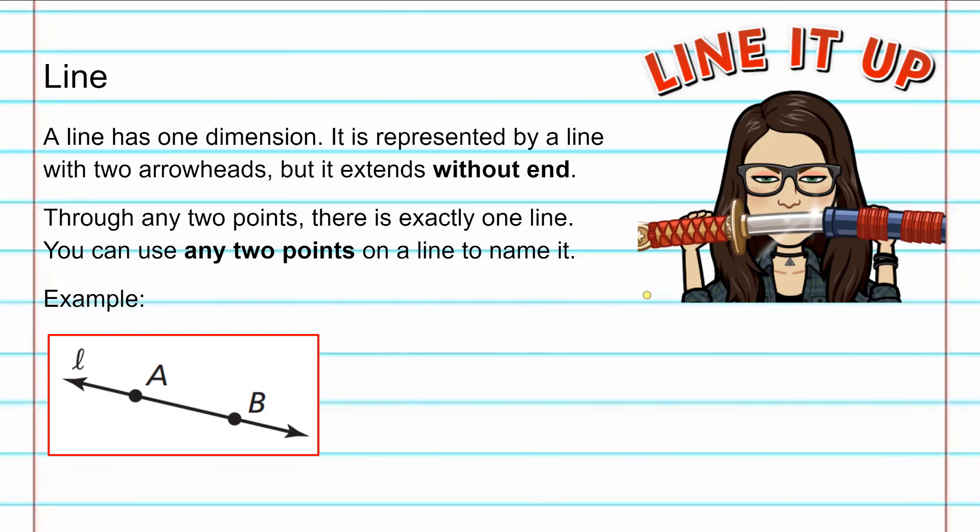For example, this line right here has the points A and B on the line. Now, L is not a point on the line. It is actually another way that we can name the line.